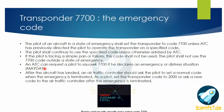An ATC can request a pilot to squawk 7700 if he declares an emergency or distress situation, that is a mayday. After the aircraft has landed, an air traffic controller should ask the pilot to set a normal squawk code when the emergency is terminated. The pilot should set the transponder code to 2000 or request a new code from the air traffic controller after the emergency is terminated. Below we have an image of a radar scope showing an aircraft squawking 7700.